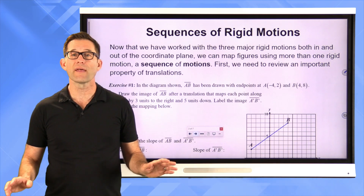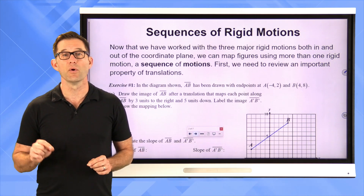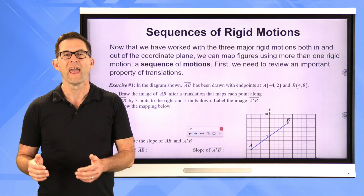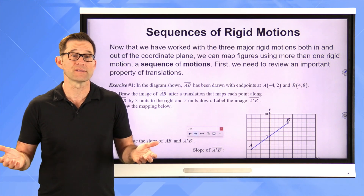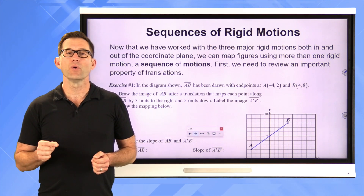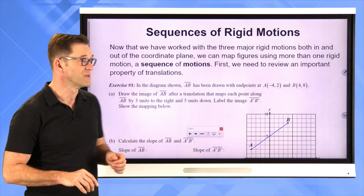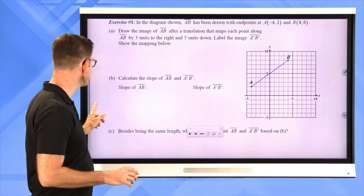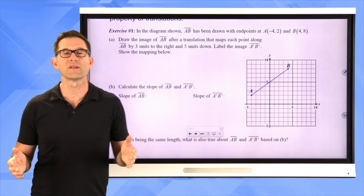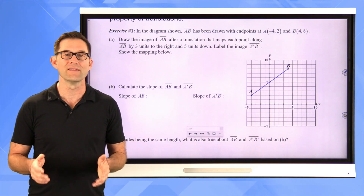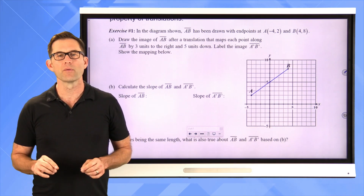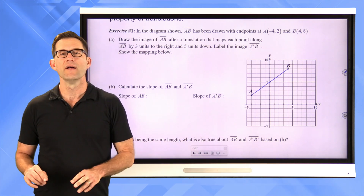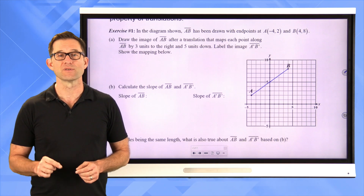Sequences of rigid motions. Now that we've worked with the three rigid motions both in and out of the coordinate plane, we can map figures using more than one rigid motion — a sequence or series of rigid motions. First we need to review an important property of translations. We didn't spend a specific day on translations because they tend to be the easiest of all the rigid motions in the coordinate plane. Let's do that in exercise number one.